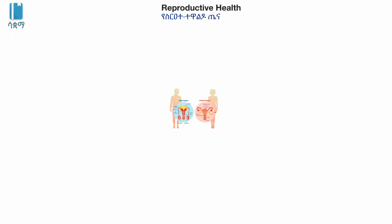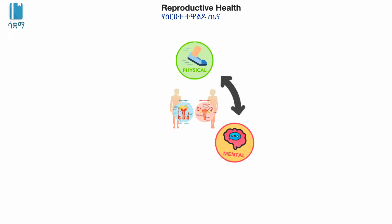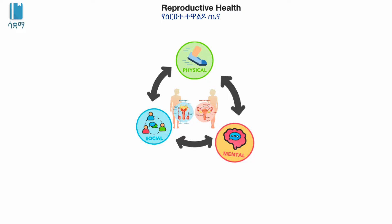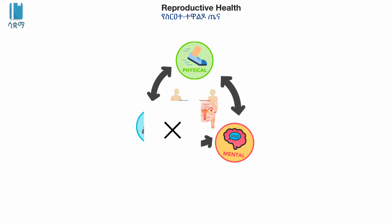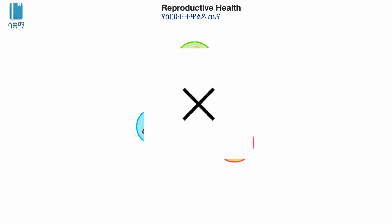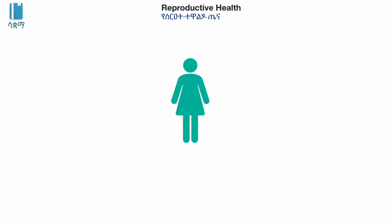There is a reproductive system that encompasses physical, mental, and social health. This is what defines reproductive health — physical and social health together. For example, this is what reproductive health means.